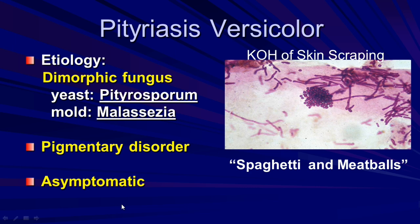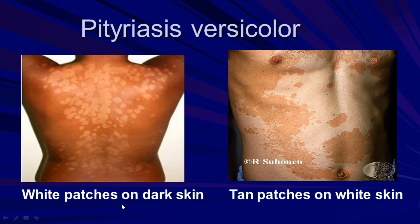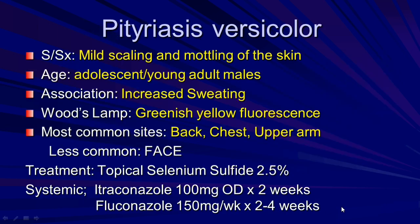Pityriasis versicolor is a pigmentary disorder and is an asymptomatic condition. The patient picture shows white patches on dark skin and tan patches on white skin. Signs and symptoms include mild scaling and mottling of the skin, affecting adolescents and young males.